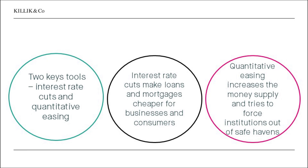Quantitative easing on the other hand is deliberately increasing the money supply. It's called money printing, and the idea is by increasing the money supply you increase a consumer's propensity to spend that money. You also simultaneously try and force institutions out of safe haven assets by buying them if you're the government or central bank, essentially pushing up the price and squeezing the yield. So it's designed as a stimulative measure, and both of those measures have been deployed recently and will probably be deployed again.